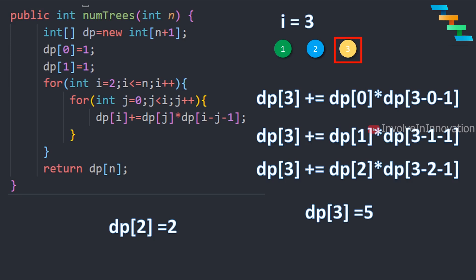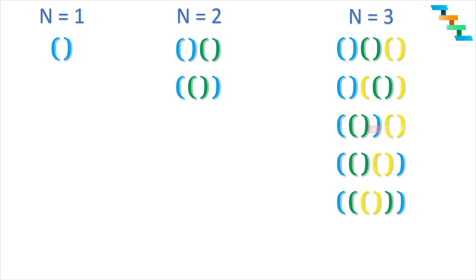This is finding the number of unique binary search trees using the Catalan number. The Catalan number is applicable to a wide variety of problems. One such problem is the combination of brackets we can arrange with given pairs — if there are 2 pairs we can form 2 combinations, and if there are 3 pairs we can form 5 combinations.